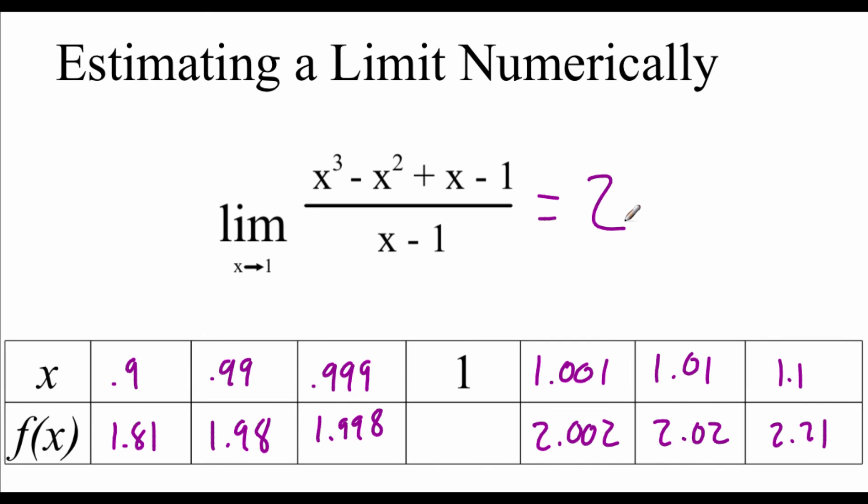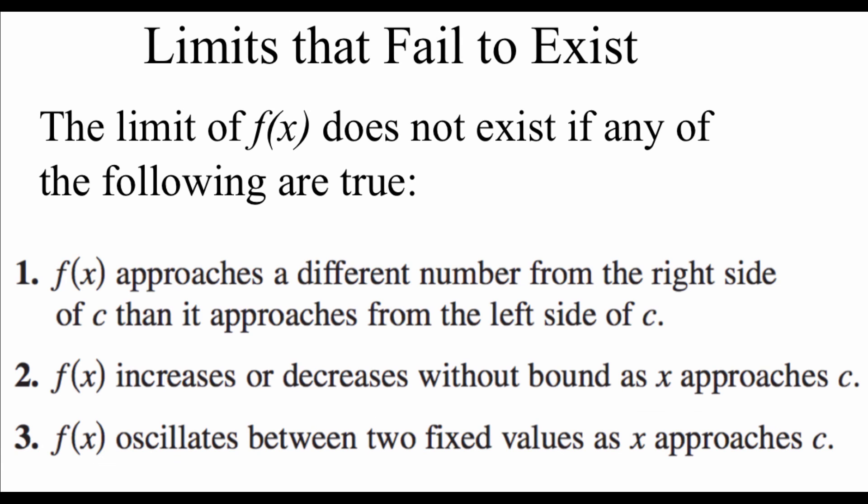There are a few times when limits won't exist. If any of these three things happen, we say the limit does not exist: first, if f of x approaches a different number from the right side of c than from the left side; second, if the function increases or decreases without bound — up to positive infinity or down to negative infinity; or third, if f of x oscillates between two values as x approaches c.